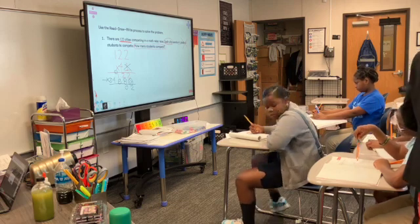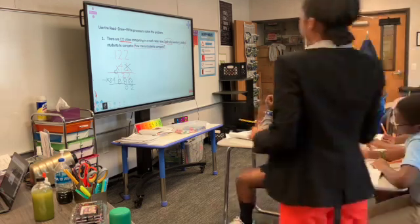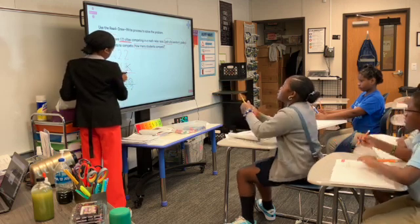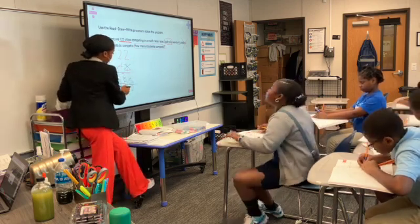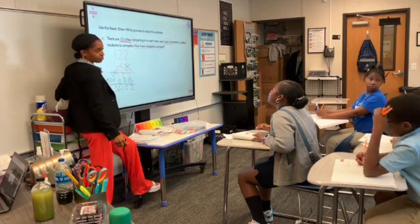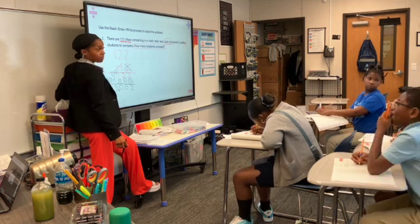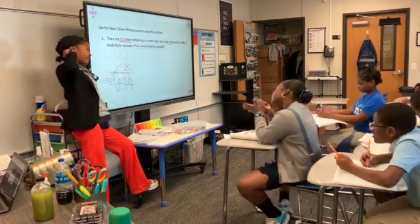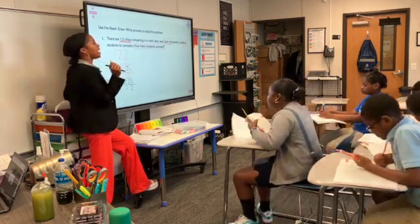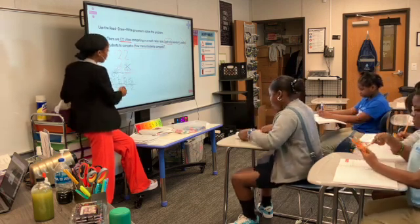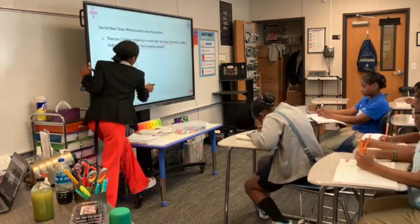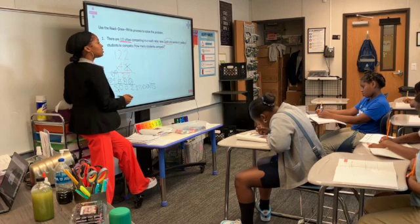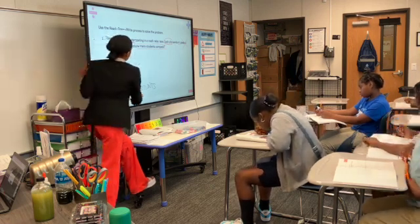Now, four plus one is five. My girl Cali got it — did anybody else get this besides Cali? All right, but is this the final answer? No! I want you to label your answers. It's 5,002 students — make sure you write 'students' and then circle it. 5,002 students.